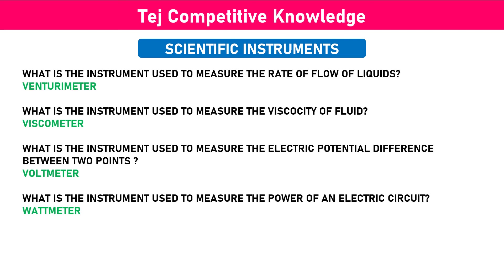What is the instrument used to measure the rate of flow of liquids? Venturimeter. What is the instrument used to measure the velocity of fluid? Viscometer. What is the instrument used to measure the electric potential difference between two points? Voltmeter. What is the instrument used to measure the power of an electric circuit? Wattmeter.